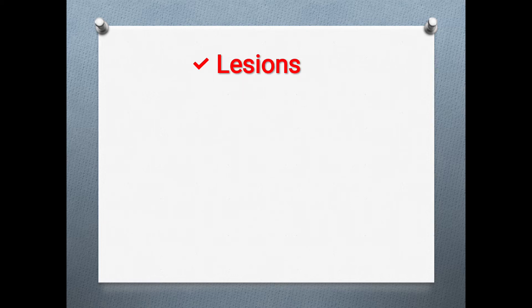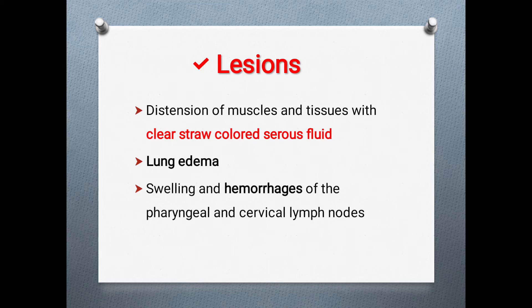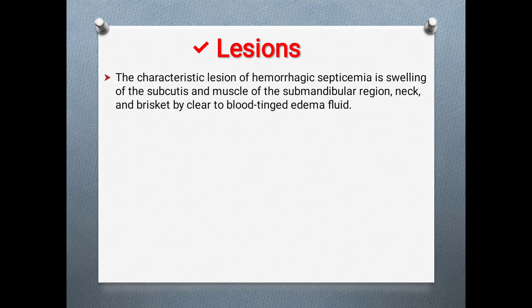Lesions of the disease: if the animal has died from the per-acute case, lesions include distension of muscles and tissues with clear serous fluid. There may be congestion or edema of the lungs, and swelling and hemorrhages of the pharyngeal and cervical lymph nodes — a prominent feature of this disease, which is why it is called Hemorrhagic Septicemia. Swelling of the subcutis and muscles of the submandibular region, neck, and brisket are also characteristic lesions.